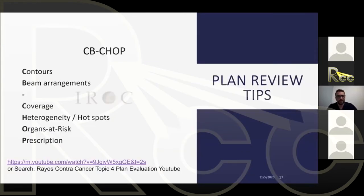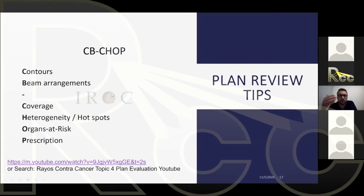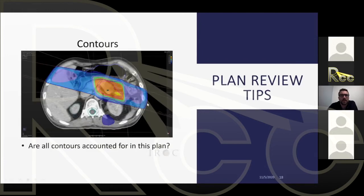Now we're going to jump in and actually run some mock chart rounds — a more interactive section. Before the cases, here's a useful acronym called CVCHOPS for plan review: C for contours, B for beam arrangements, then coverage, hot spots, organs at risk, and prescription. These slides come from a video by REOS on cancer plan evaluation available on YouTube — a great resource to review while evaluating the upcoming cases.